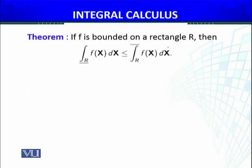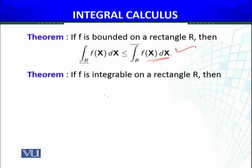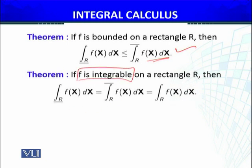If f is bounded on a rectangle R, then the lower integral is always less than or equal to the upper integral. This is because lower sums are always less than upper sums. The lower integral is the supremum of the set of lower sums, and the upper integral is the infimum of the set of upper sums. If f is integrable on a rectangle R, then the upper integral equals the lower integral equals the Riemann integral over the rectangle R — all three integrals have the same value.